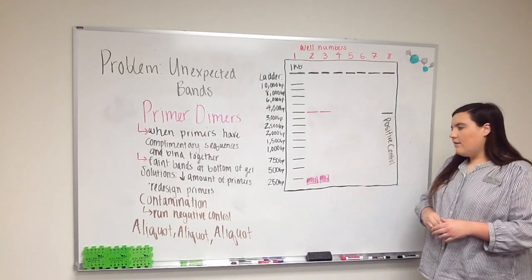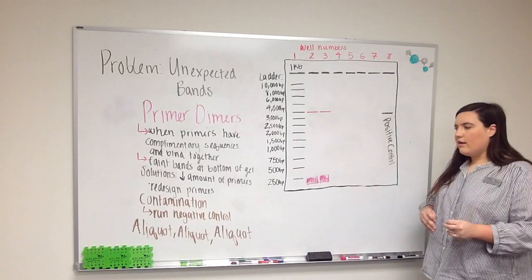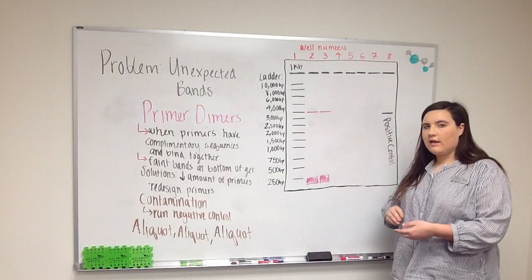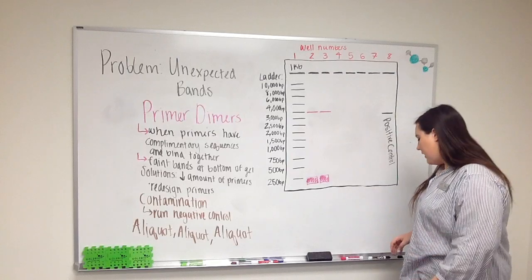What these are is when the primers have complementary sequences to each other and they bind to each other. Since they're such short fragments, they make a small faint band on the very bottom of your gel. How to minimize this is to reduce the amount of primers you're using, and also you can redesign your primers so that they're not complementary to each other and they're just complementary to the template strand that you're trying to amplify.